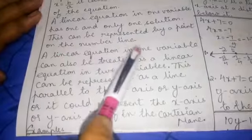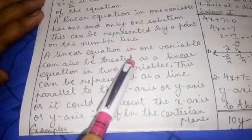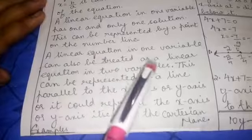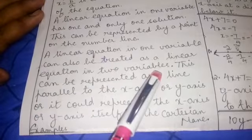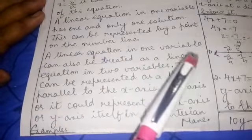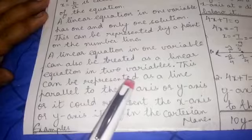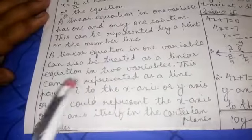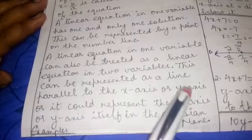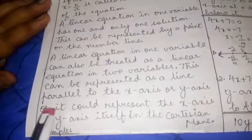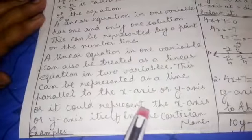A linear equation in one variable can also be treated as a linear equation in two variables. This can be represented as a line parallel to the x-axis or parallel to the y-axis, or it could represent the x-axis or the y-axis itself in the Cartesian plane.